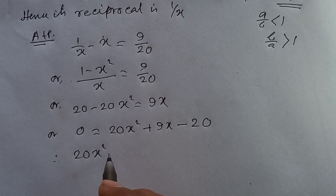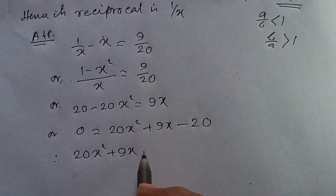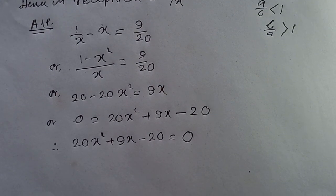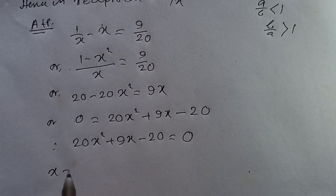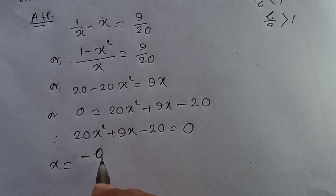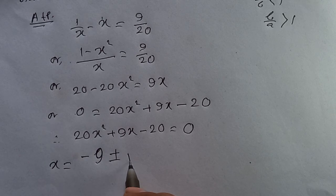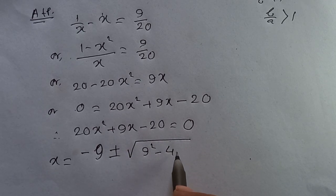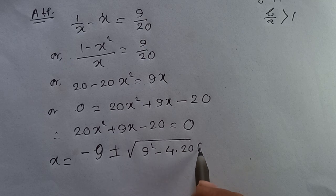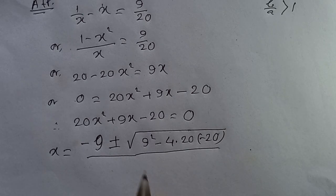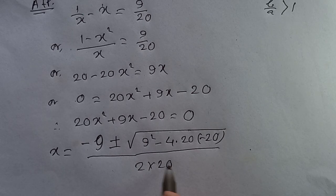Hence the quadratic equation is 20x squared plus 9x minus 20 equals 0. Using the quadratic formula, x equals minus b plus or minus root over b squared minus 4ac, all over 2a. Here b equals 9, so x equals minus 9 plus or minus root over 9 squared minus 4 times 1 times minus 20, over 2 times 20.